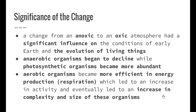The main part of the dot point is to explain the significance on the evolution of life of the change from an anoxic to an oxic atmosphere. This change had a significant influence on the conditions of early Earth and the evolution of living things. Anaerobic organisms began to decline while photosynthetic organisms became more abundant. Anaerobic organisms survive without oxygen, so with more oxygen available they were no longer favoured and began to die out, whereas photosynthetic organisms — those that convert carbon dioxide into oxygen — began to thrive.